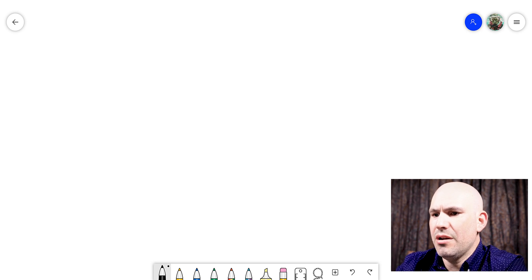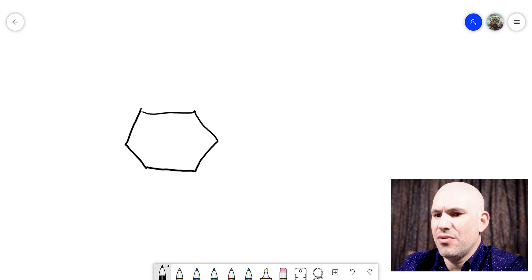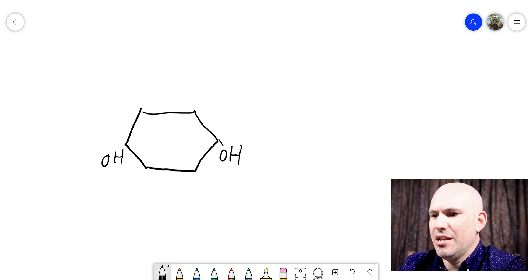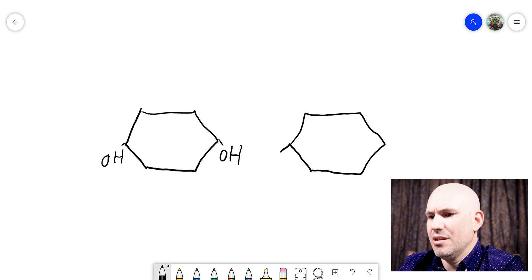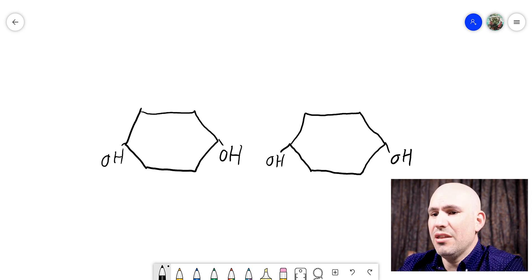So when we look at our glucose molecules, they end in hydroxides. So you have a hydroxide on each end. And so if I draw another glucose molecule over here, it's also going to end in a hydroxide. And so if we want to connect these two glucoses together, if we want to connect these two monomers together, we're going to use a process called dehydration synthesis.